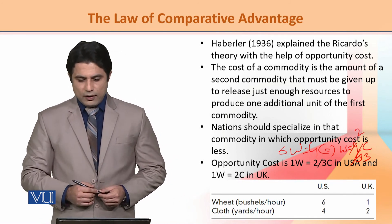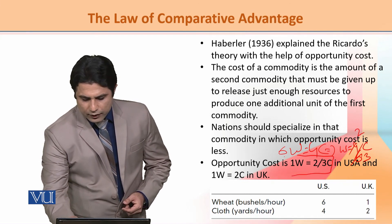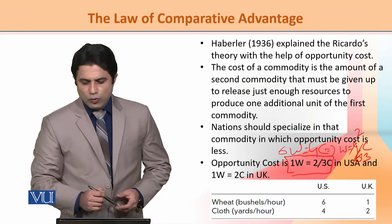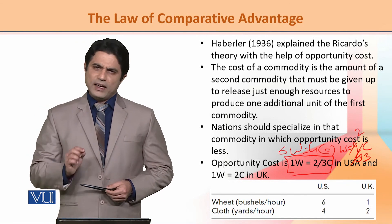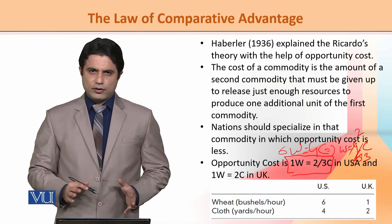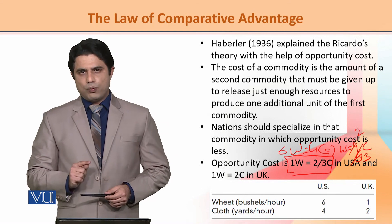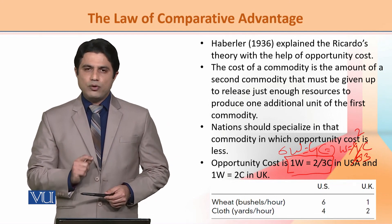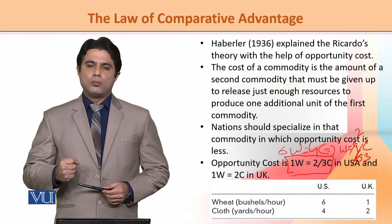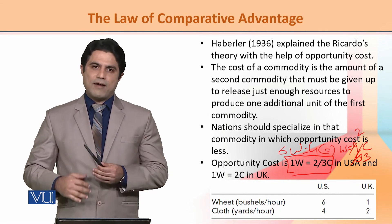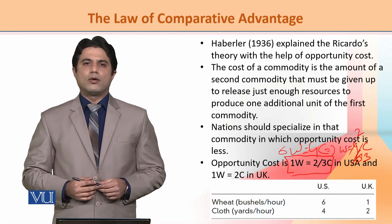We can say the opportunity cost is 1 wheat equals 2/3 unit of cloth. That is the opportunity cost in the simplest sense — if you want to produce 1 unit of wheat, how many units of cloth must you give up to produce one additional unit of wheat.